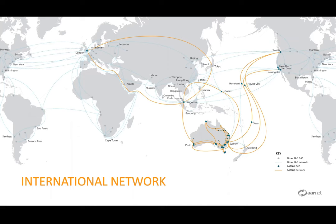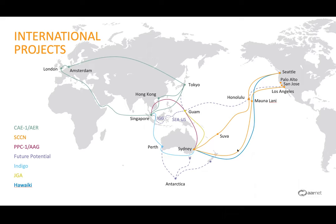Internationally, the orange lines represent the cable plant we connect via to get international connectivity into our backbone. There's a lot going from Sydney up into Seattle and Los Angeles over the Southern Cross cable network. We also have connections via JGA into Guam and up to Tokyo, as well as via the Indigo cable from Sydney to Perth, Perth to Singapore, and then over AC1 from Singapore to London. These are all 100-gig paths, and we've got plenty of international capability to burst out into those regions.